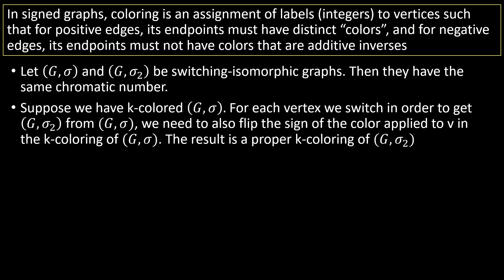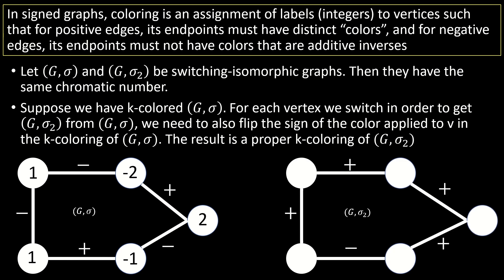Basically, if G-sigma and G-sigma-2 are two switching isomorphic graphs and G-sigma is K-colorable, then each time we switch a vertex toward our goal of obtaining G-sigma-2, we must also flip the sign of the label we gave that vertex in the original K-coloring of G-sigma. The resulting coloring we get of G-sigma-2 will always be a proper K-coloring.